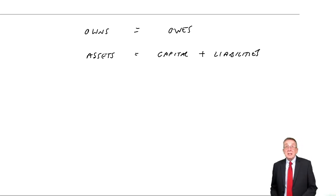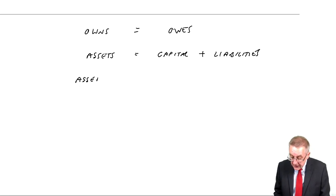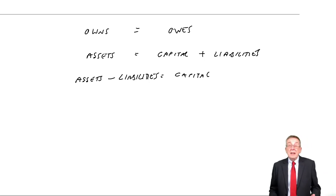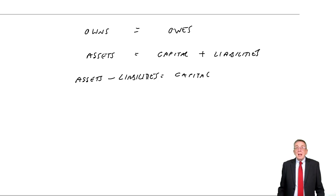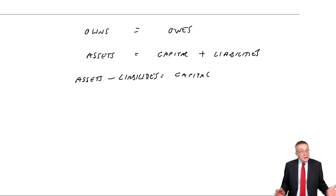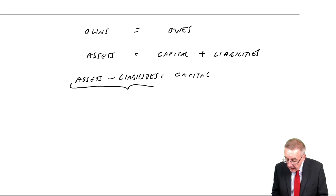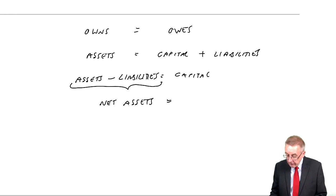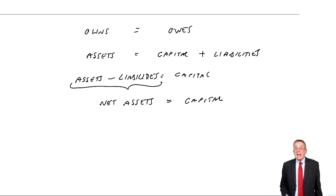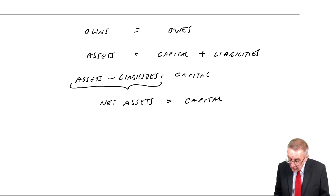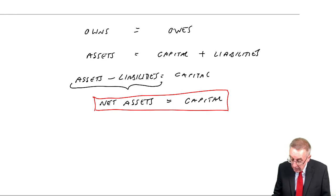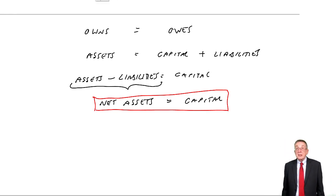I can write that slightly differently. If you subtract liabilities from both sides, the assets minus the liabilities at any point in time will equal the capital. In that first example I went through, although everything kept changing, every time we did a statement the assets equalled the capital plus the liabilities, or assets minus liabilities equalled the capital. Another word for assets minus liabilities is the net assets. So there is the first accounting equation: at any point in time, the net assets of the business will equal the total owed to the owner — the capital.